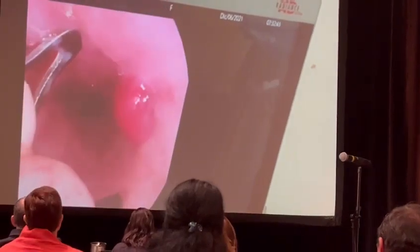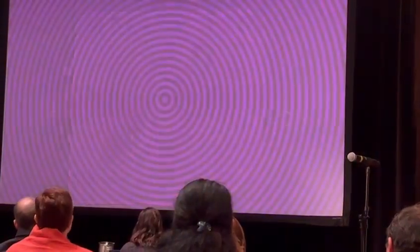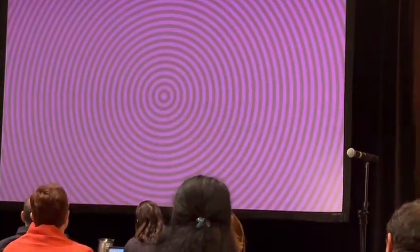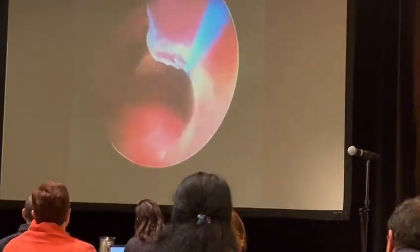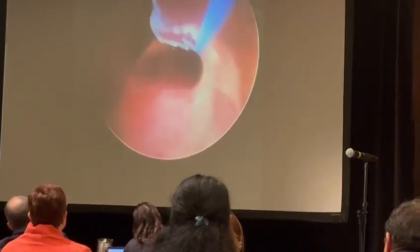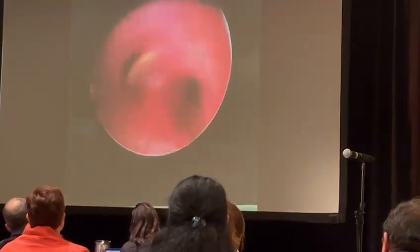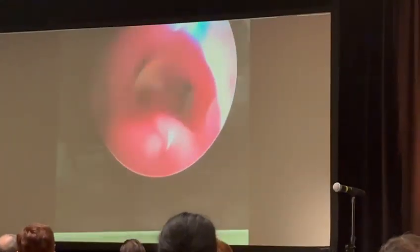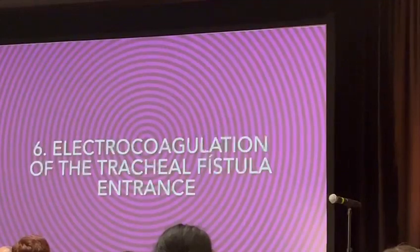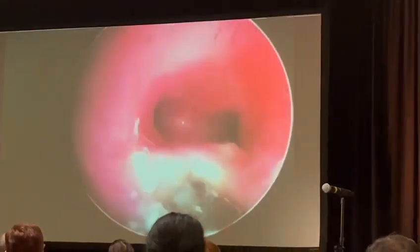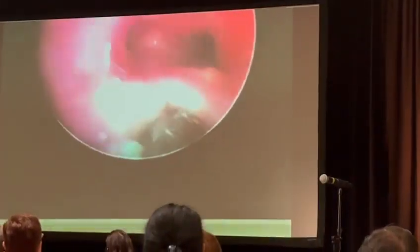This is the tracheoesophageal view. Then, in the bronchoscopic approach, we apply the trichloroacetic acid — TCA — to the tracheoesophageal fistula site, or electrocauterization too.